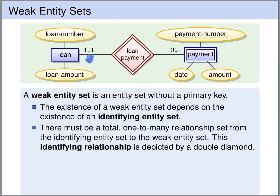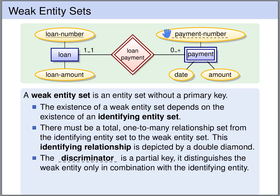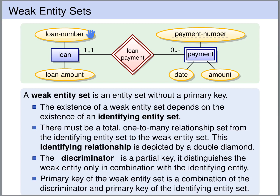The main point is this cardinality: every weak entity must be connected to precisely one of the identifying entities. The discriminator of the weak entity set is a partial key. It distinguishes the weak entities only in combination with the key of the identifying entity set. So the primary key of the weak entity set is obtained by combining the discriminator of the weak entity set with the key of the identifying entity set.